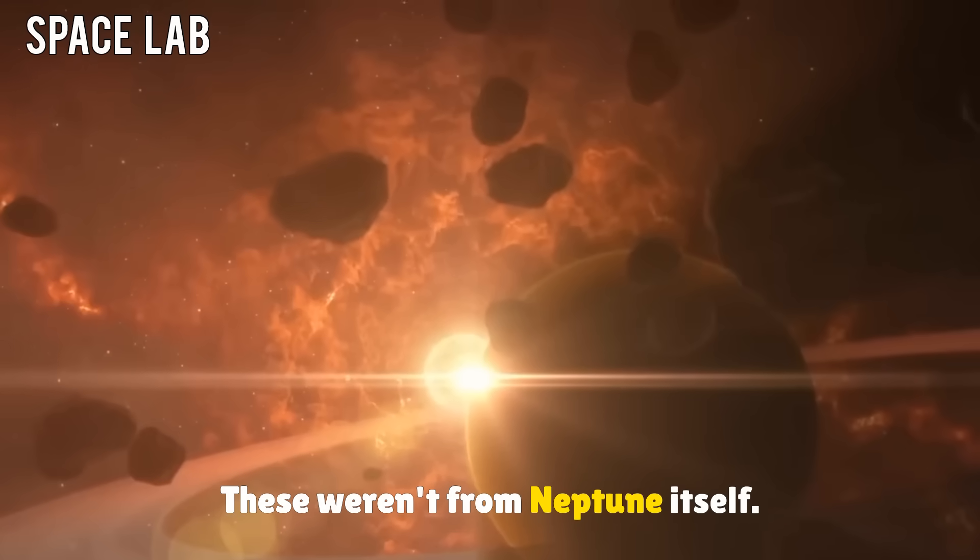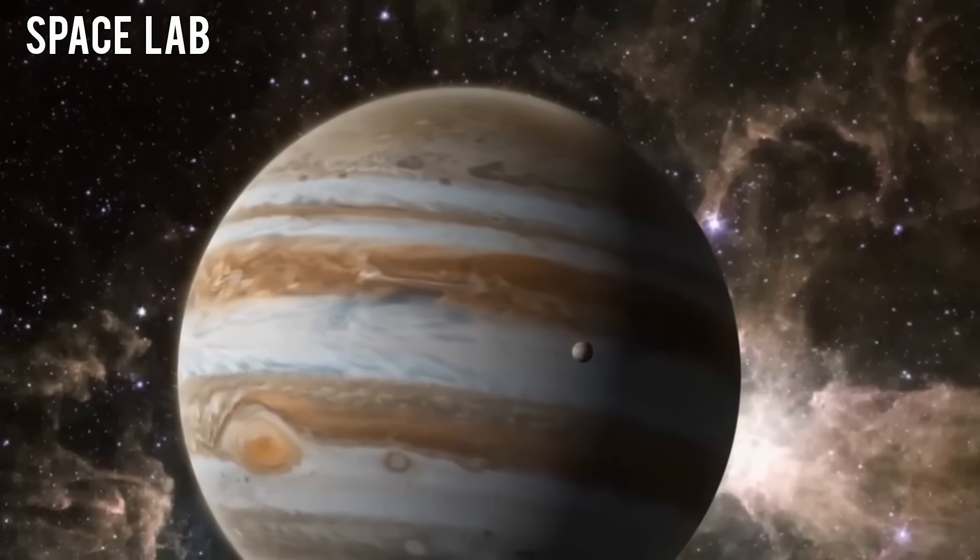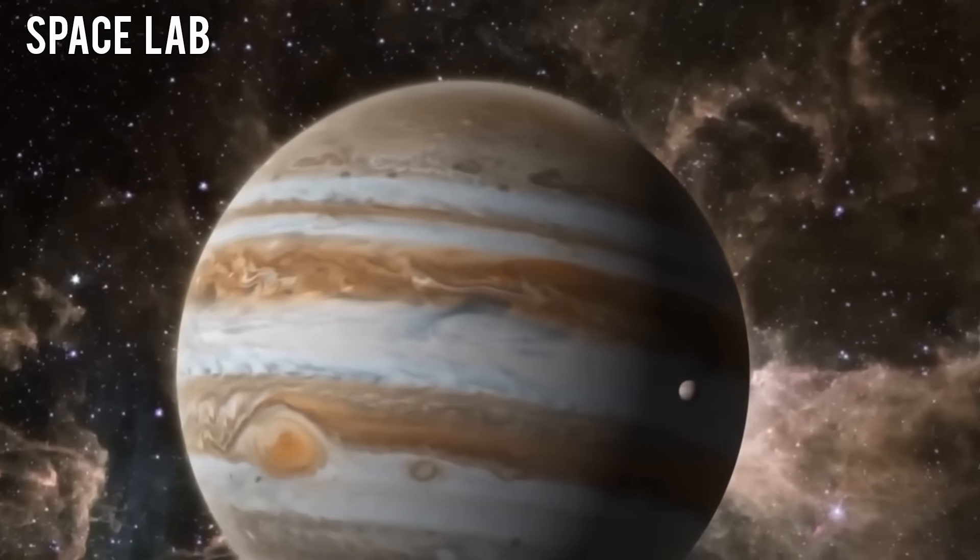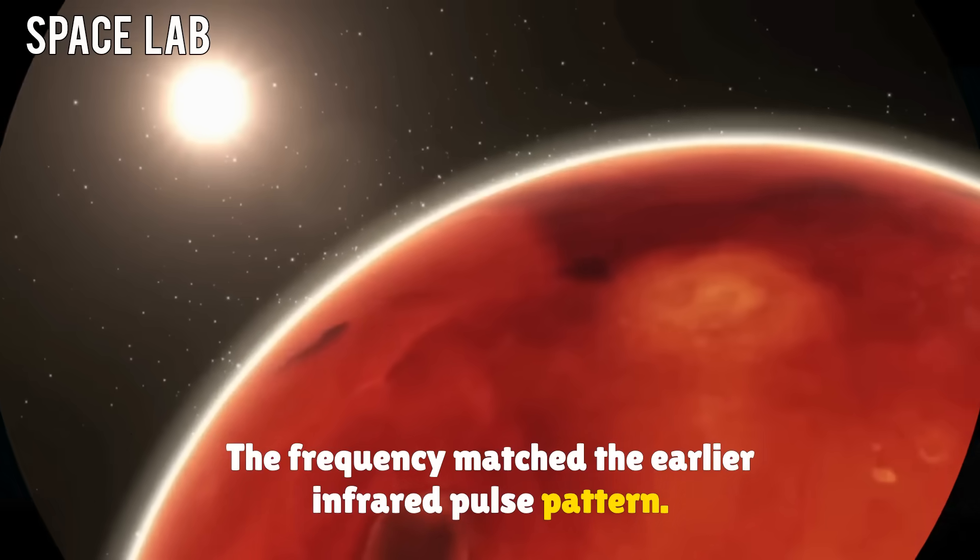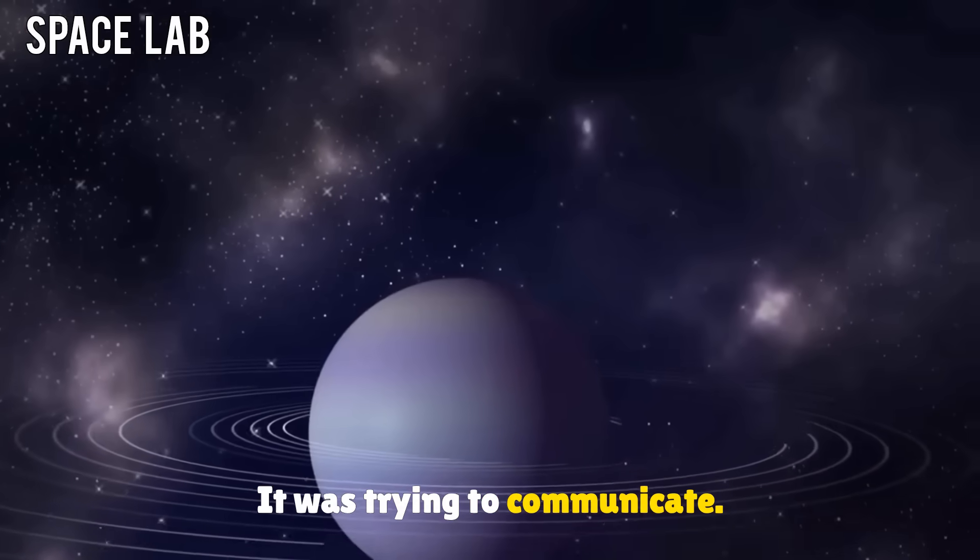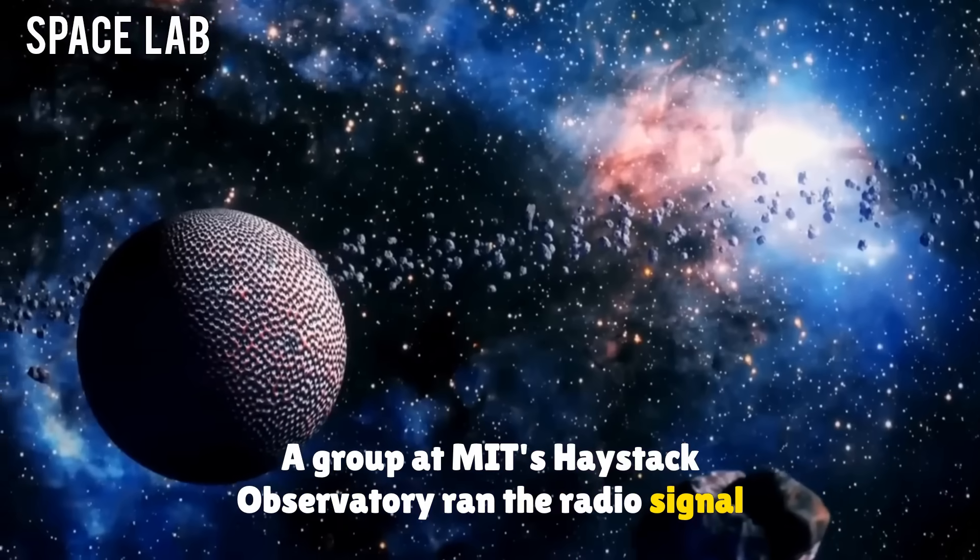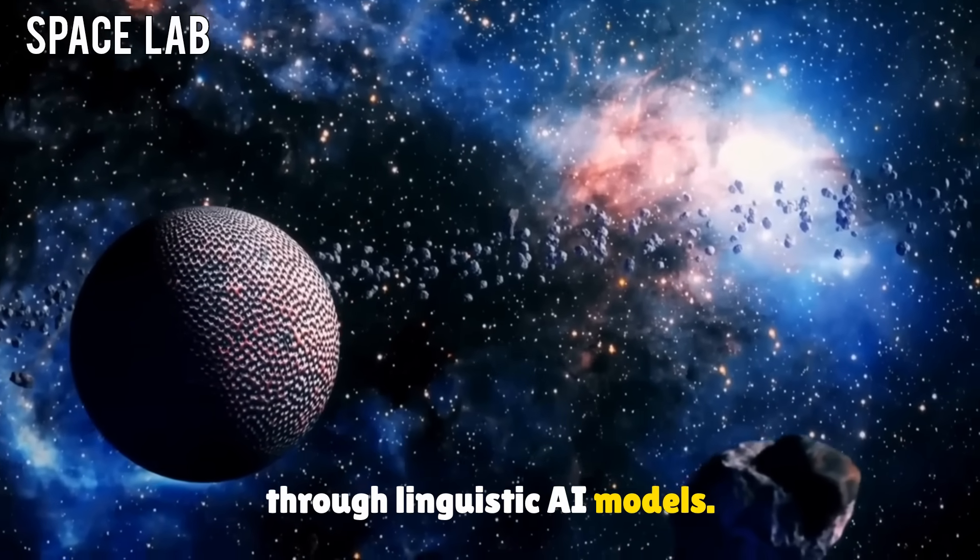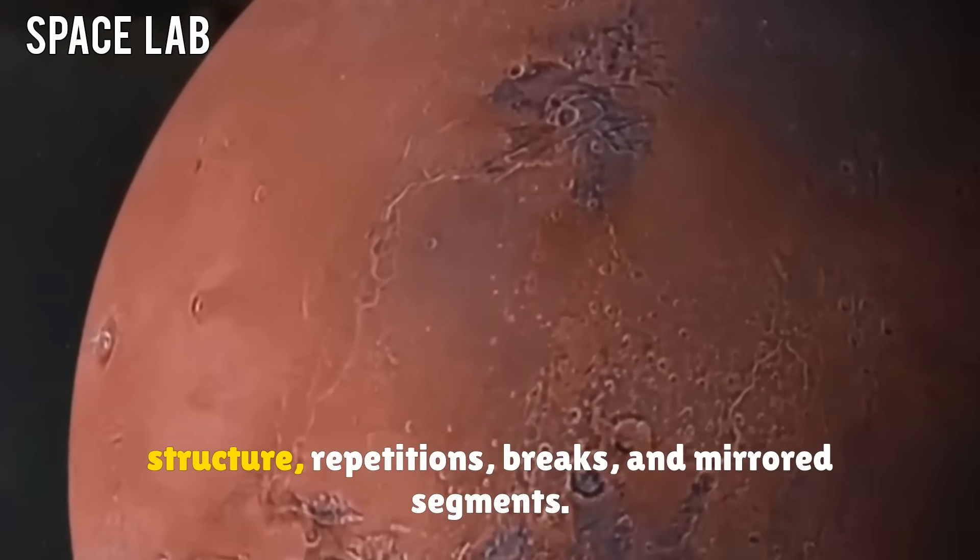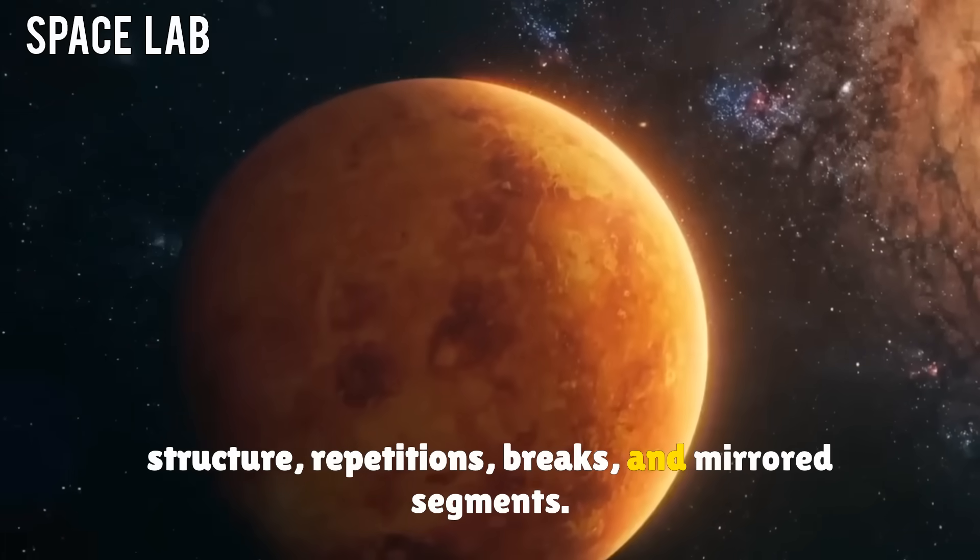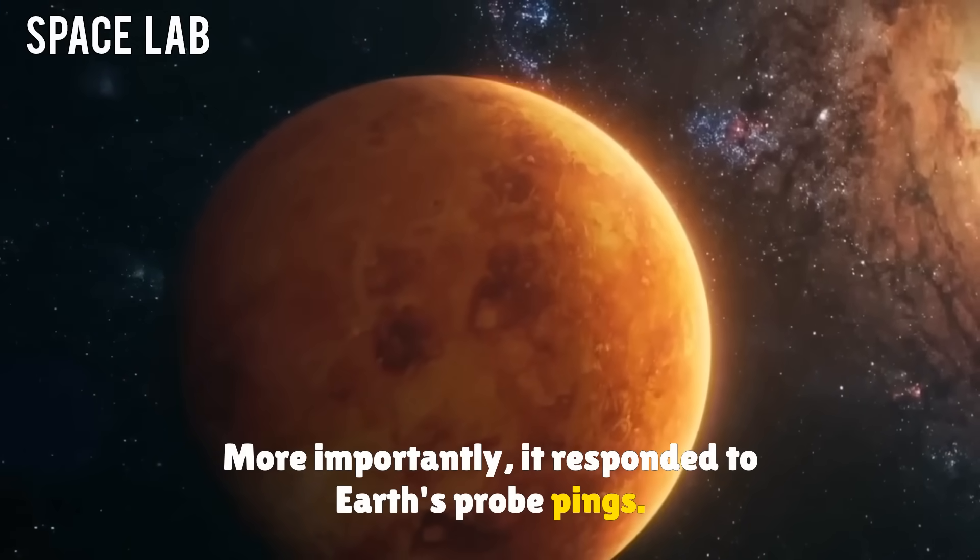These weren't from Neptune itself. Scientists knew the planet's typical magnetic fluctuations. This was something else entirely. The frequency matched the earlier infrared pulse pattern. It was trying to communicate. A group at MIT's Haystack Observatory ran the radio signal through linguistic AI models. While not a language per se, the signal had grammatical structure, repetitions, breaks, and mirrored segments.